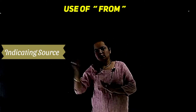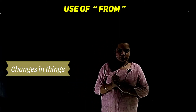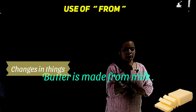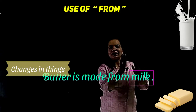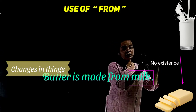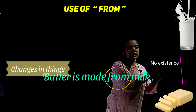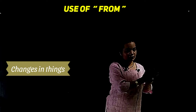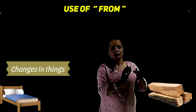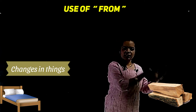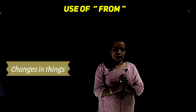The third use of 'from' is for changes in things. For example, 'Butter is made from milk.' The key point here is that butter shows no existence of milk — the original material is not visible in the final product. So we use 'from'. But if the original material is still visible, we use 'of' — for example, 'This bed is made of wood' or 'This chair is made of wood,' because wood is still visible. So 'from' is used when there is no existence of the original material.